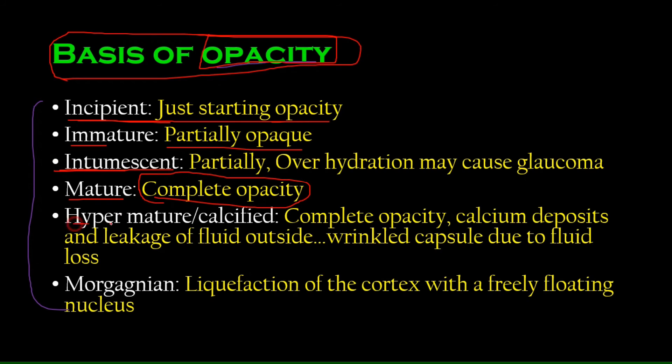Then we have the hypermature, where it is a bit of an extreme form of mature. And what happens is, or I also call this calcified. It's a bit different in the way it's written in our book, but I assure you, this is correct. So what happens in a hypermature cataract is that there is, of course, complete opacity because it's mature as well. And you can see calcium deposits there. That's why it's called calcified. You can see calcium deposits and there is also leakage of the fluid outside. There is some problem with the capsule. The capsule leaks out the fluid. Remember, we studied that the lens is like 70% of water. And that water, when it leaks outside the membrane or the capsule will kind of go limp. It'll get wrinkled. Wrinkled capsule due to fluid loss.